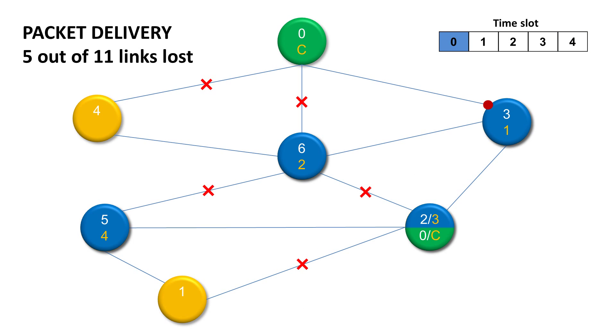You can see that the IQMesh algorithm is very robust so even in very bad conditions you will get your message delivered. In our case we have 5 out of 11 links lost and the message is delivered successfully to all nodes anyhow.